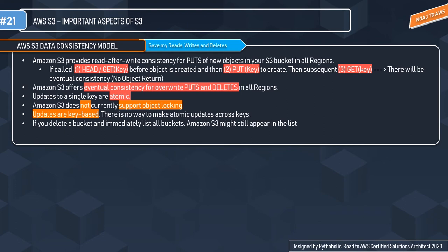Now let's discuss one of the most important and interesting aspects of S3 — the consistency model, or data consistency model. Before moving on, let's understand what consistency means in general terms. Consistency is the quality of always behaving or performing in a similar way. When you have something consistent, you can easily determine what its behavior will be at any given point in time.